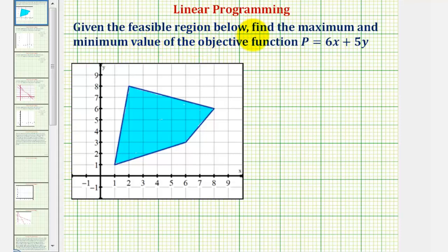In this problem we're given the feasible region below, which is the shaded region given by this quadrilateral. Remember for a linear programming problem, the feasible region is a solution to the system of inequalities which make up the constraints.